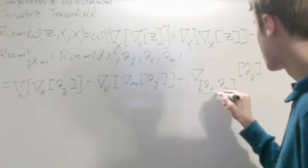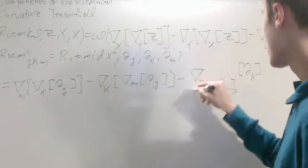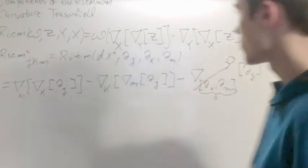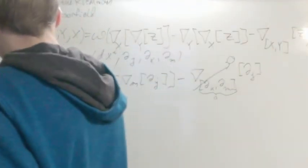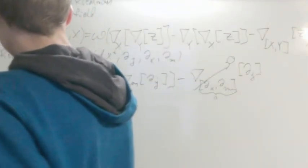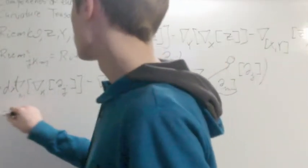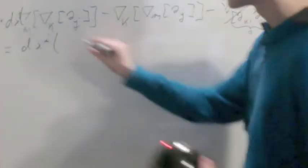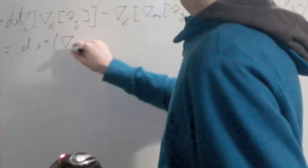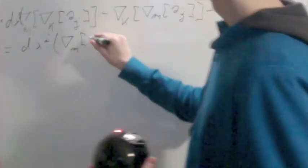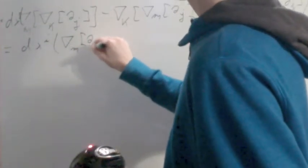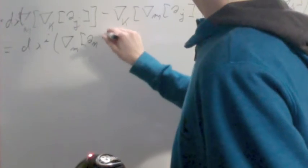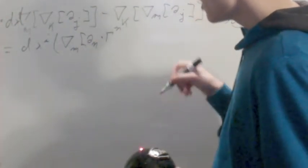This turns out to be zero, so that this entire thing goes to zero. And remember that we're applying DX I to this entire thing, which is going to be equal to DX I of... Okay, now let's evaluate some of these things.